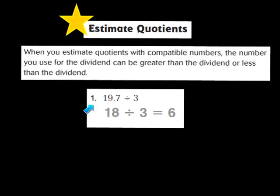Let's take a look at question number 1. They give us the problem 19 and 7 tenths divided by 3. Our job is to use compatible numbers — numbers that are close to the given numbers that make it easier to calculate in your head — to estimate the quotient.